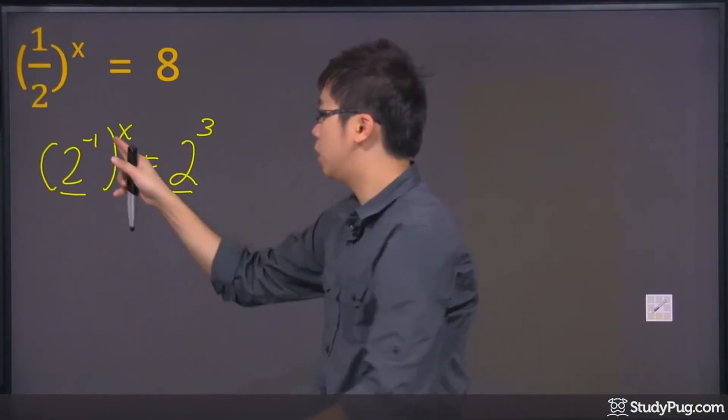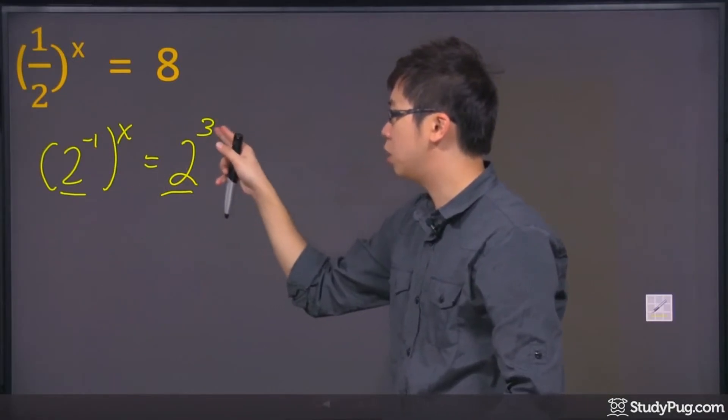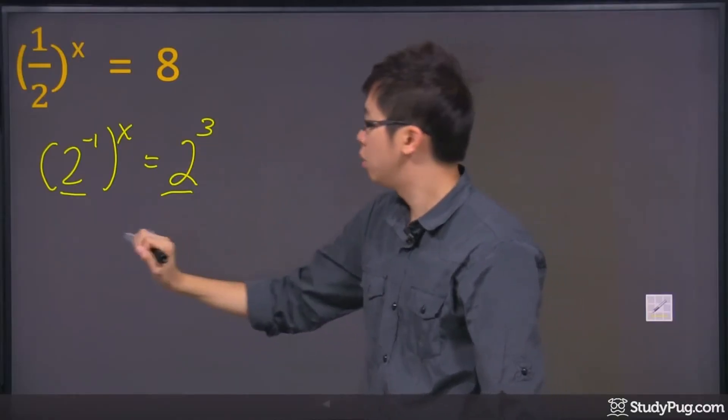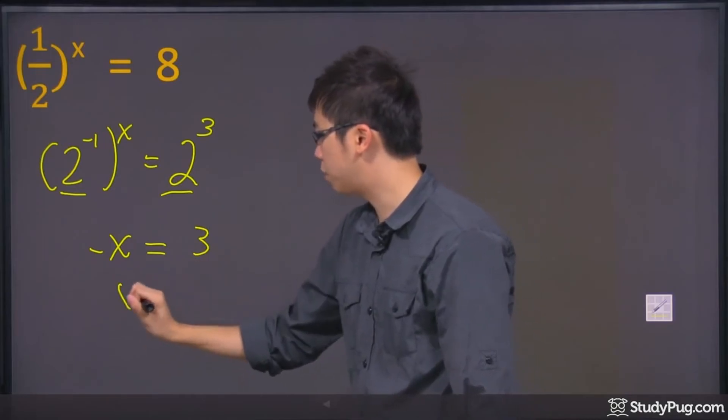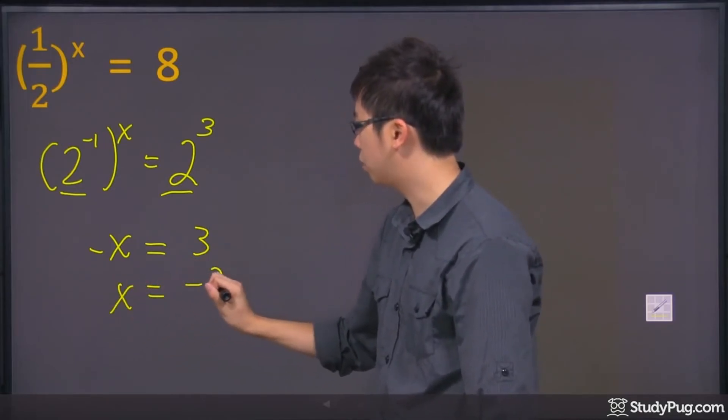The base is the same. The negative x here must be equal to this exponent here as well. So we're left with just negative x equals 3. That means x equals negative 3.